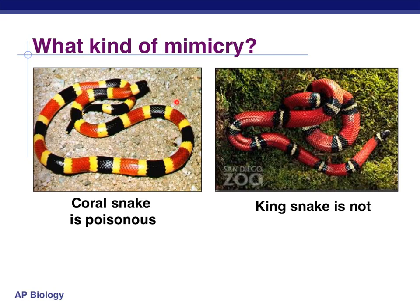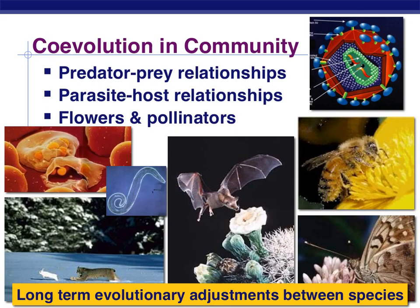Here's another mimicry example: the kingsnake, which is not poisonous, and the coral snake, which is definitely poisonous. This would be an example of Batesian mimicry. Hopefully you're picking up on the pattern that there is a lot of co-evolution taking place in a community. Predator and prey co-evolve together — predators getting adaptations to catch prey better, and prey getting adaptations to elude or defend themselves. We see the same thing with parasites and host organisms, and with flowers and pollinators: as flowers change shape, what can pollinate them also changes, and both tend to evolve together over time. That's called co-evolution, and it tends to be a community trait.